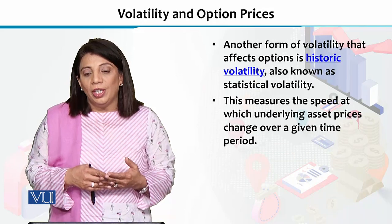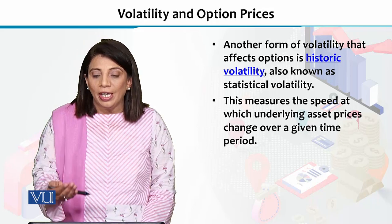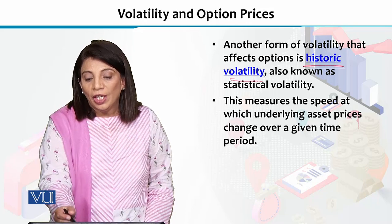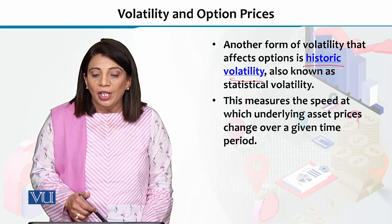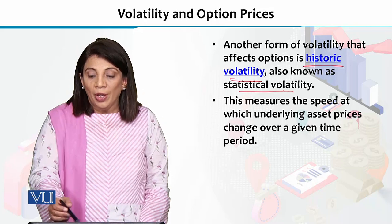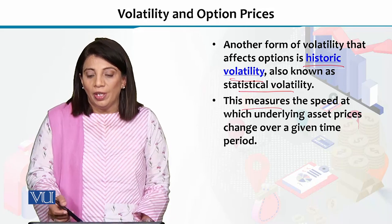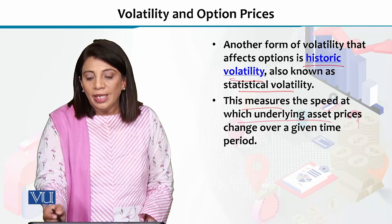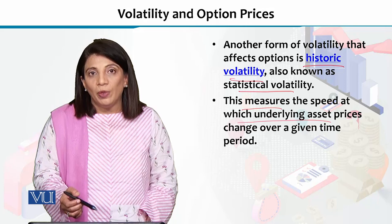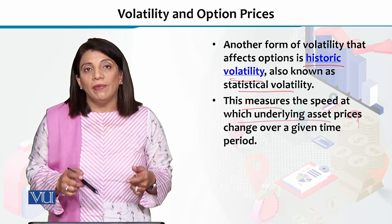Another form of volatility — jaisa meinne implied volatility ki baat ki — toh implied volatility ke ilaava, there is another type of volatility which is known as the historic volatility. Historic volatility ko hain statistical volatility bhi kehte hain, because yeh woh paimana hai volatility ka jis se hum measure karte hain — the speed at which underlying asset prices change over a given time period.